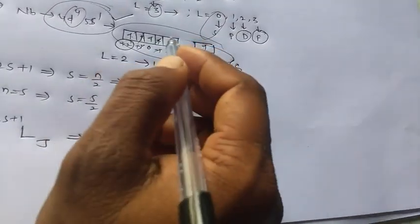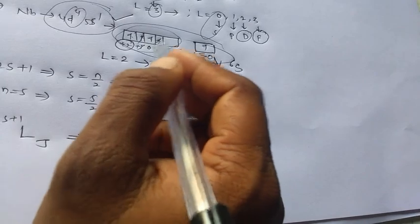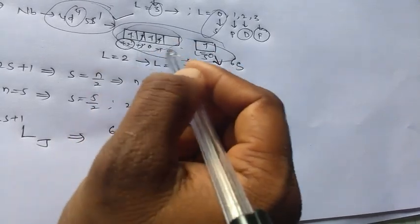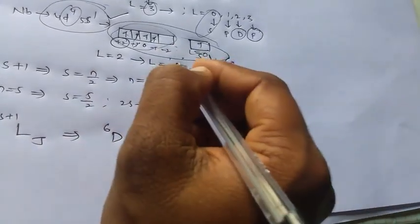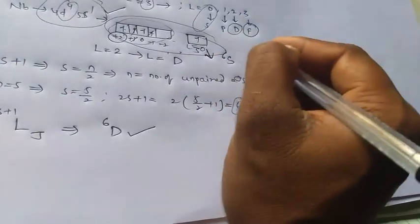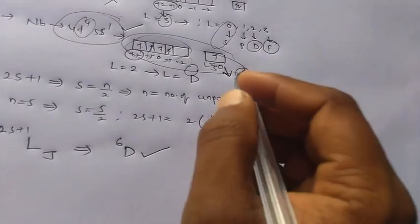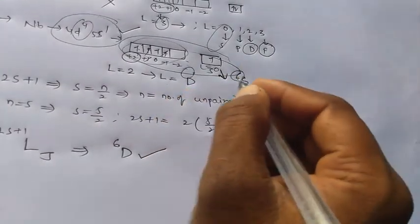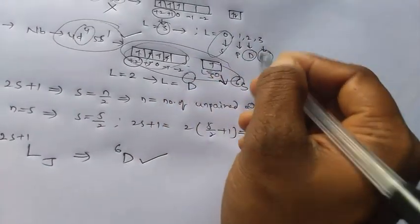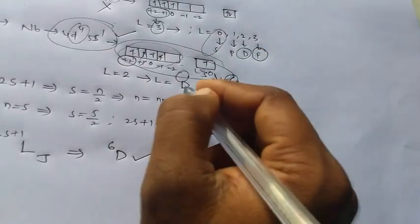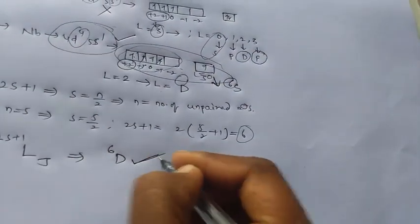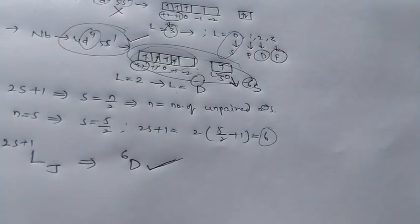And we know that for the less than half-filled electronic configurations, if multiplicity is same, then we go for L values. The highest L value is taken as ground state. So D is taken as ground state here.